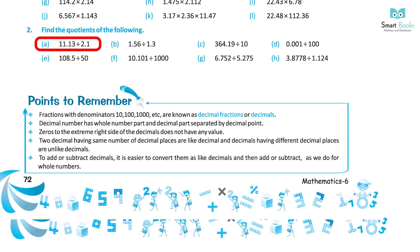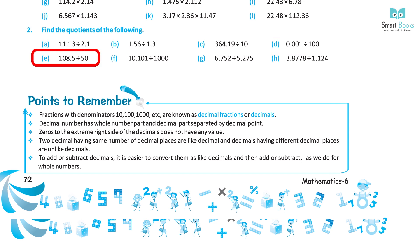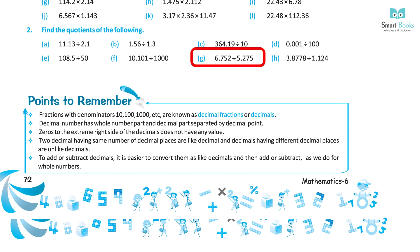Question 2: Find the quotients of the following. A. 11.13 ÷ 2.1 = 5.3. B. 1.56 ÷ 1.3 = 1.2. C. 364.19 ÷ 10 = 36.419. D. 0.001 ÷ 100 = 0.00001. E. 108.5 ÷ 50 = 2.17. F. 10.101 ÷ 1000 = 0.010101. G. 6.752 ÷ 5.275 = 1.28. H. 3.8778 ÷ 1.124 = 3.45.